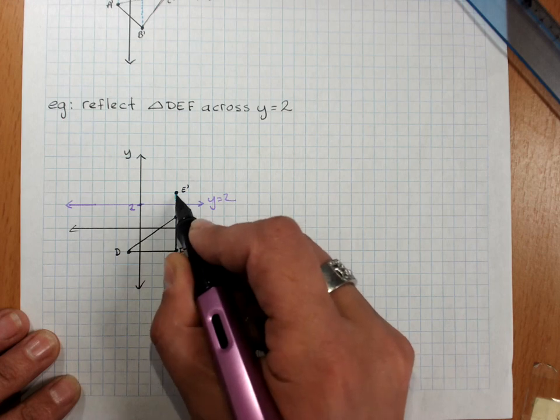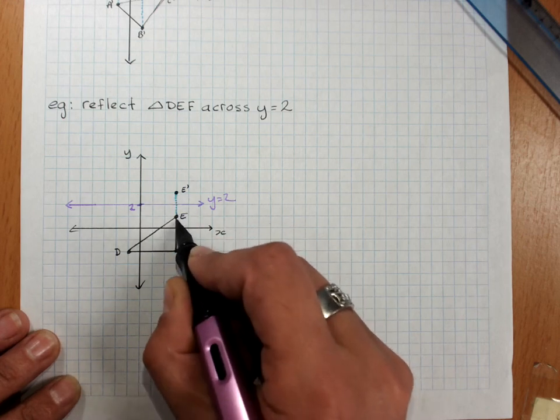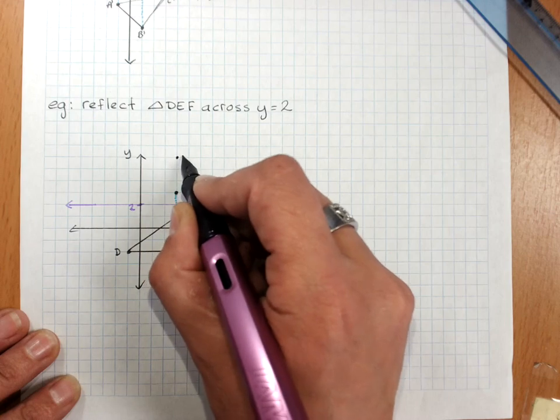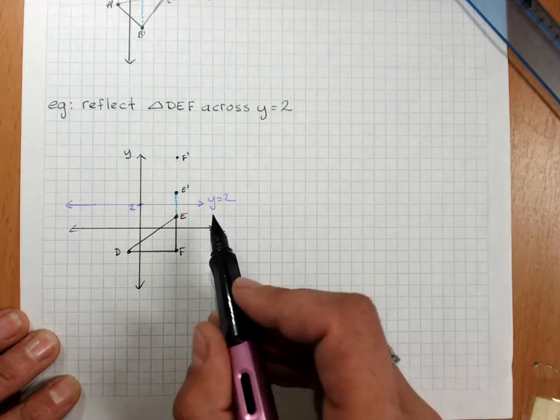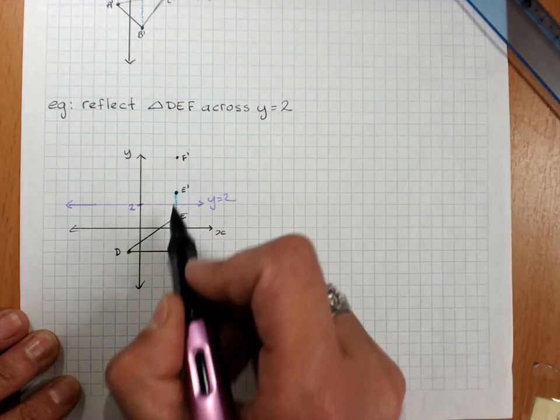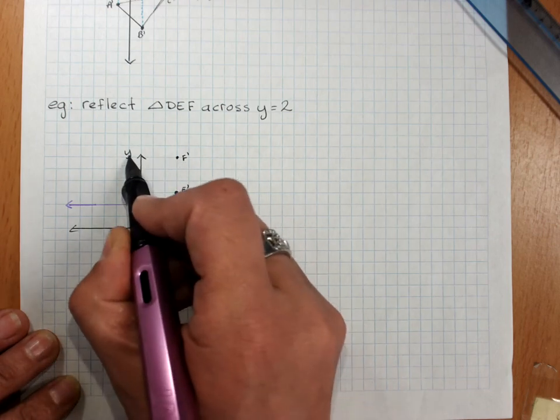And you can see where F will turn up. E was one grid square away. F is another three away in the same line. And if we're being very clever, we can see exactly where D will turn up.